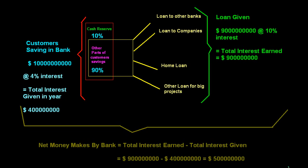Dear students, today we will explain how a bank makes money. The main source of earning of a bank is interest. We know that a bank gets money from customers in the form of savings. Suppose there are 1 lakh customers of a bank and the bank gets 10 billion dollars in savings.